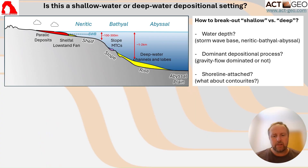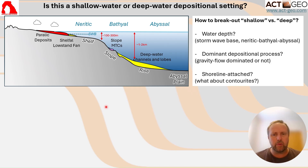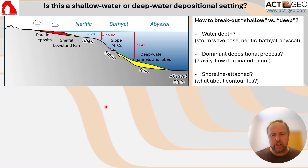One of the things about shallow water and deep water depositional settings is that in a lot of textbooks and teaching materials, we tend to break out marine clastic depositional systems by either being shallow water or deep water. And like so many things in geology, the actual definition of that is not always clear and can be quite variable. So what makes something a shallow water versus a deep water setting? Well, it's obviously a water depth thing.